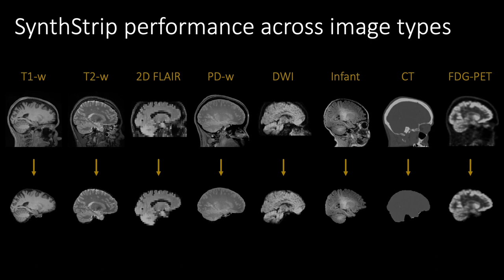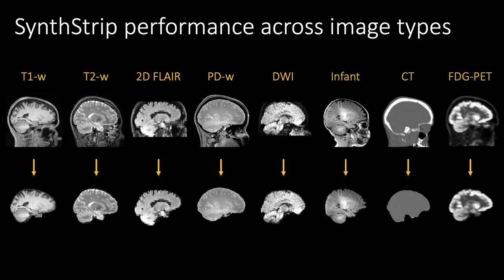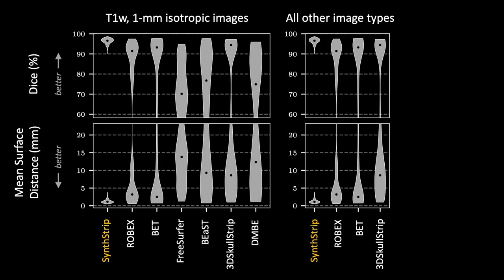When evaluating a trained SynthStrip model on real brain scans, it performs with high accuracy and robustness to a landscape of image types. These include various MR acquisitions like adult T1-weighted, T2-weighted, stack-of-slice FLAIR, proton density and diffusion images, as well as infant images and even CT and PET scans. We compare SynthStrip to a handful of popular skull-stripping baseline methods, using a set of nearly 600 images spanning modality, resolution, age, and pathology.